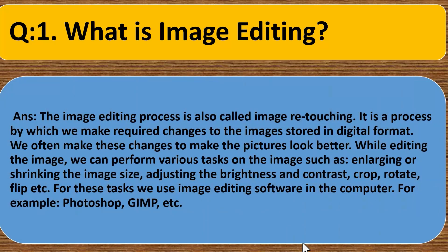Short answer type questions. Question first. What is image editing? Answer. The image editing process is also called image retouching. It is a process by which we make required changes to the images stored in digital format. We often make these changes to make the pictures look better. While editing the image, we can perform various tasks on the image such as enlarging or shrinking the image size, adjusting the brightness and contrast, crop, rotate, flip, etc. For these tasks, we use image editing software in the computer. For example, Photoshop, GIMP, etc.